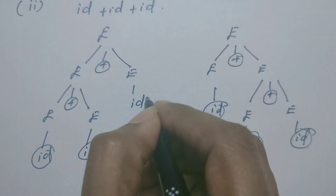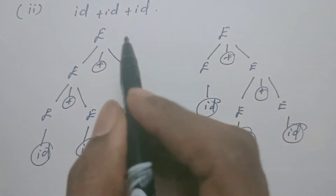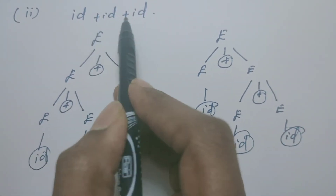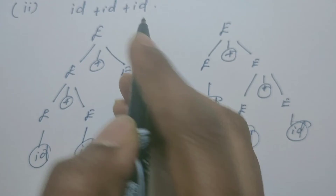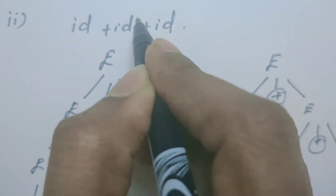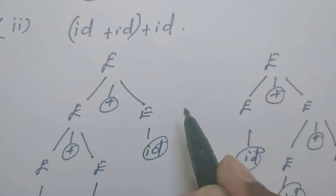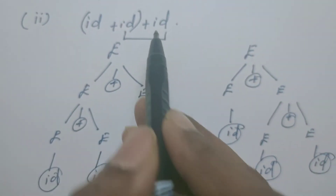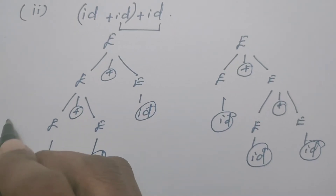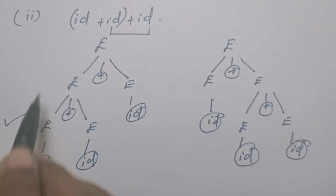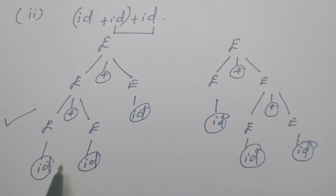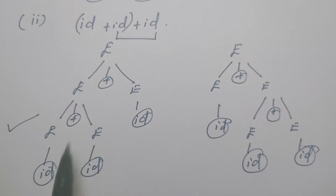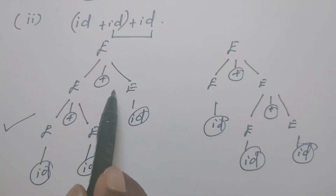Out of these two parse trees, the question is which is a valid one? Look into the expression — how is it to be evaluated? Since both operators are plus, left associativity is to be ensured. First, this ID plus ID is to be calculated, then the result must be added with ID. The parse tree ensuring left associativity is the valid one — the leftmost plus operation is done first, followed by the second addition operation.